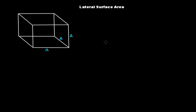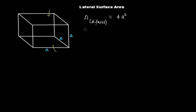For the lateral surface area, we forget about the top face and the bottom face, considering only four faces: front, back, right side, and left side. The area of one face is a², so the area of four faces is 4a². Therefore, the formula for the lateral surface area is 4a², where a is the length of each side.